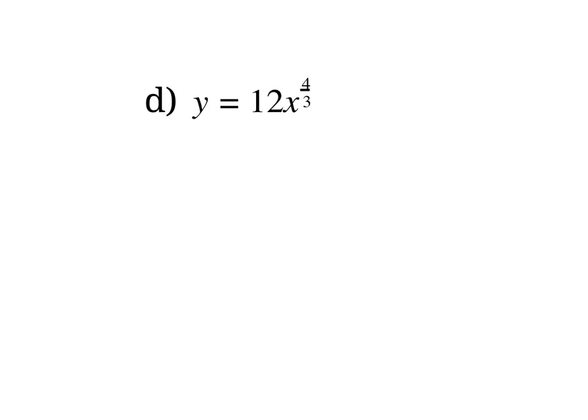Lastly, for part d, y prime equals: we bring that 4 thirds down in front, so 12 times 4 thirds gives 48 over 3 times x to the power of 4 thirds minus 1, which is 1 third. That's already simplified with a positive exponent, so we don't need to do anything else.